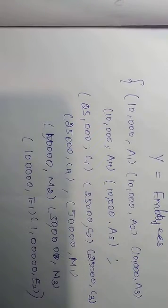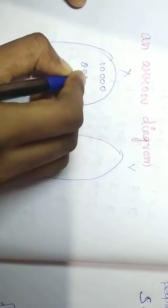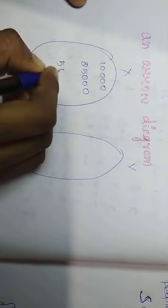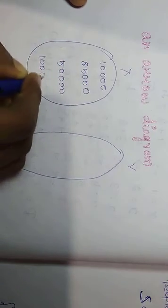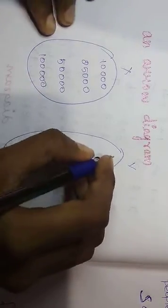Next we have arrow diagram. So salaries, next and the employees. X, Y, first 10,000, 25,000, 50,000, 1 lakh.